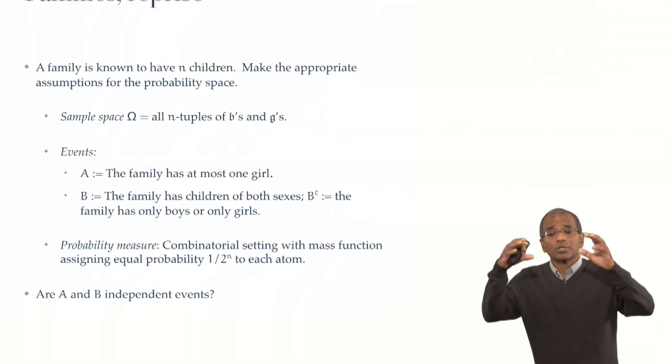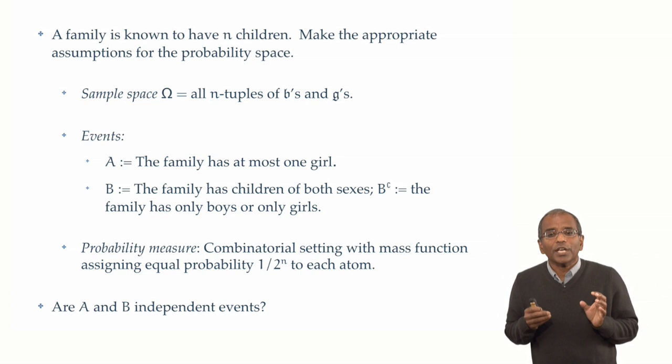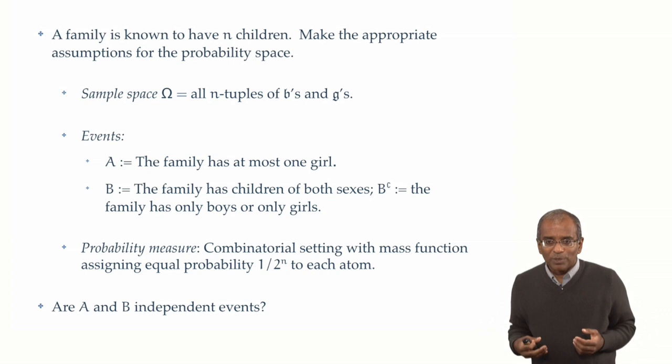So a family is known to have n children. The sample space now is a system of n-tuples of genders, where each element is a boy or a girl, B or a G. How many n-tuples are there? Well, if there are just two children, there are four possibilities, BB, BG, GB, GG. When there are three children, as we saw, there are eight possibilities. Four children give you 16 possibilities. And in general, with n children, there are 2 to the power n possibilities for the distribution of genders across those n children.